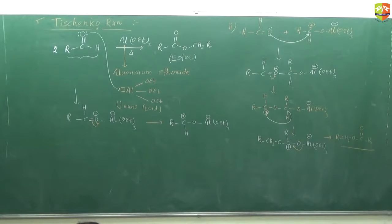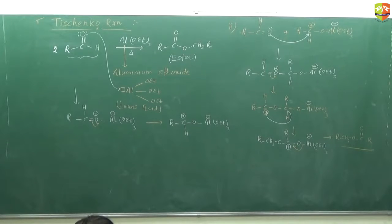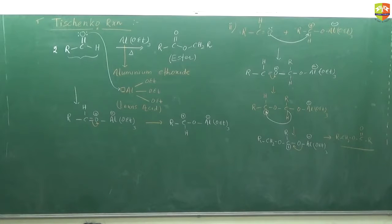This Tischenko reaction converts aldehyde into an ester. The reagent is Al(OEt)₃, aluminium ethoxide.